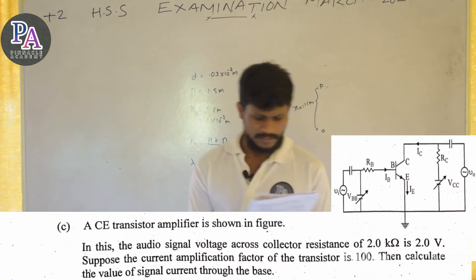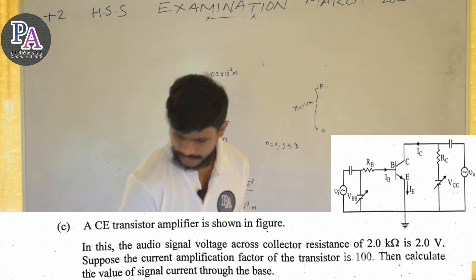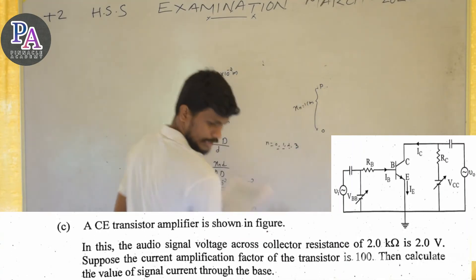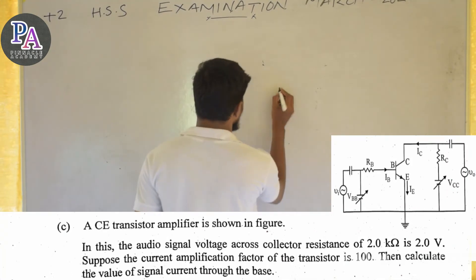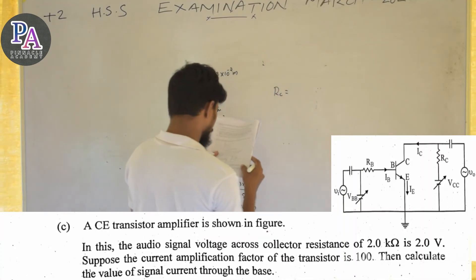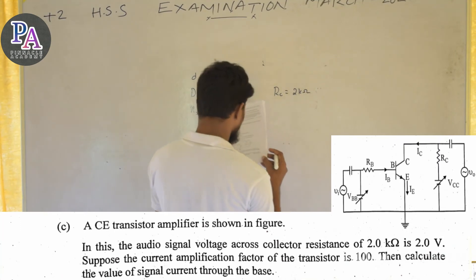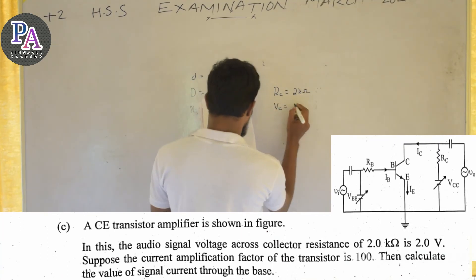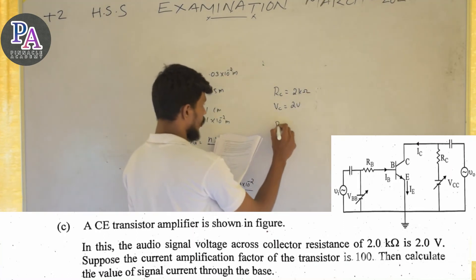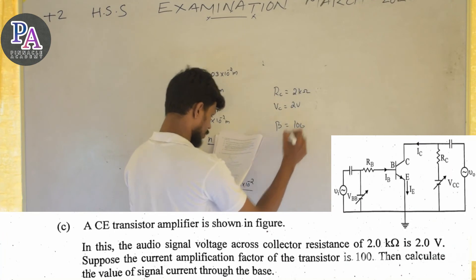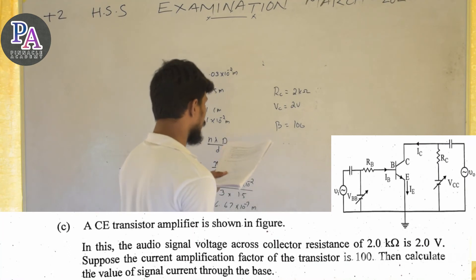A common emitter amplifier is shown in the figure. The common emitter transistor configuration has a collector resistor. Suppose beta equals 100, and we need to calculate the value of signal current through the base.